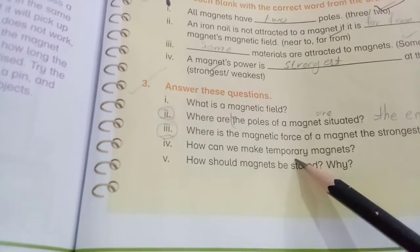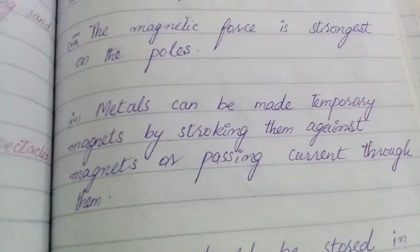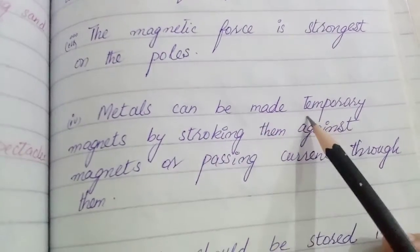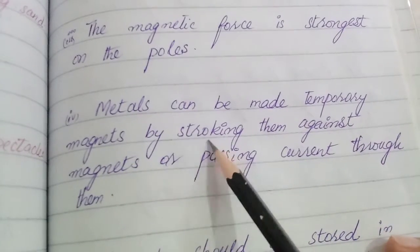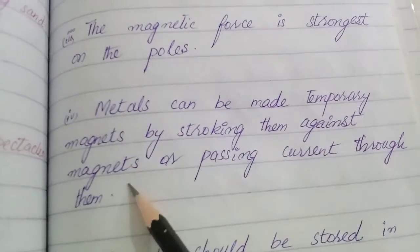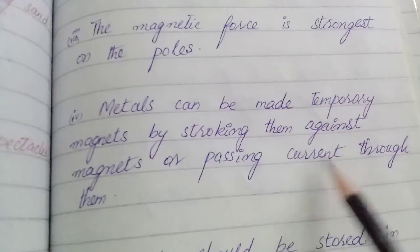How can we make temporary magnets? Metals can be made temporary magnets by stroking them against magnets and passing current through them.